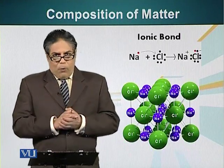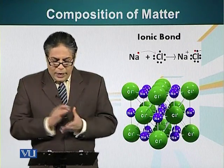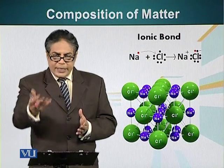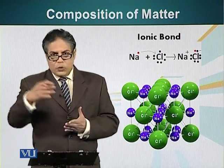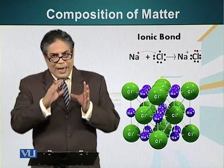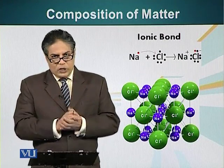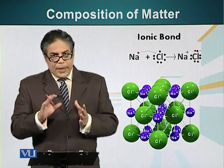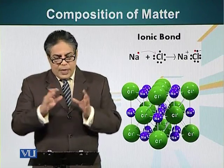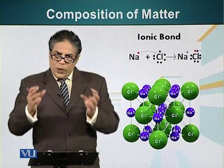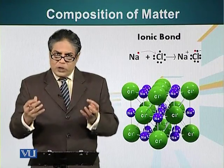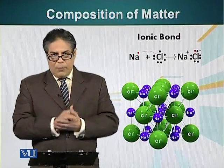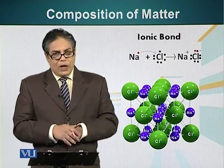Let's look at another type of bond, the ionic bond, in which an atom donates its electron to another atom. When an atom donates its electron, it becomes positively charged and the atom that receives the electron becomes negatively charged. Because these two atoms have opposite charges, they attract each other and this attraction results in a bond called an ionic bond.